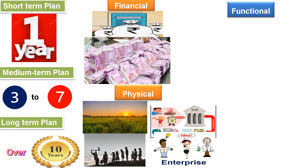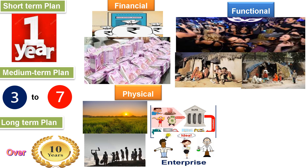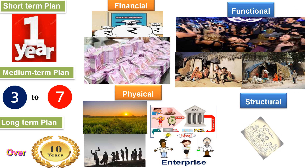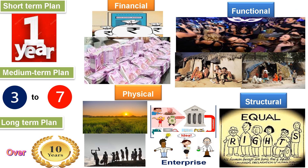Functional planning seeks to change society's functioning without changing its structure. Structural planning, on the other hand, involves changing society's actual structure.